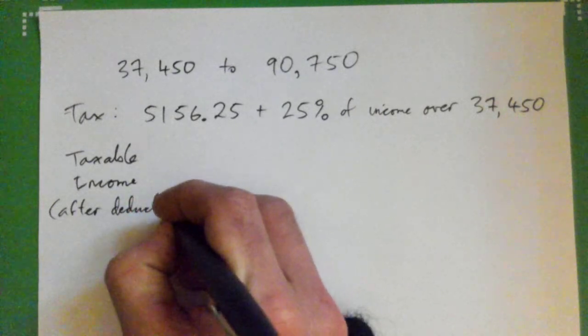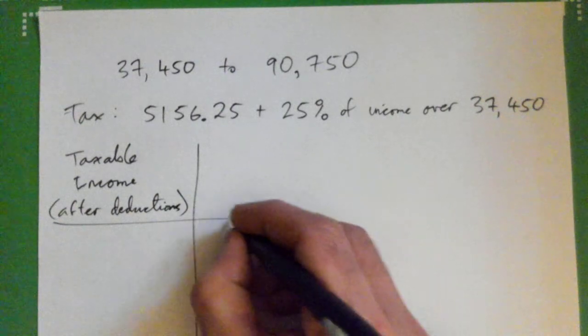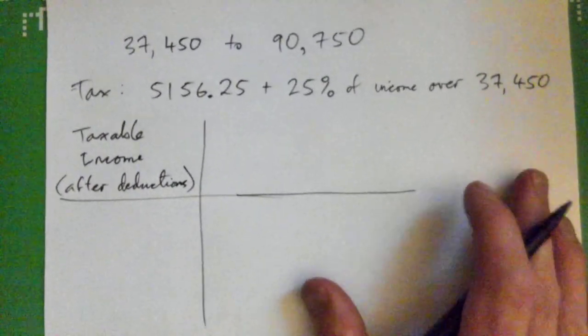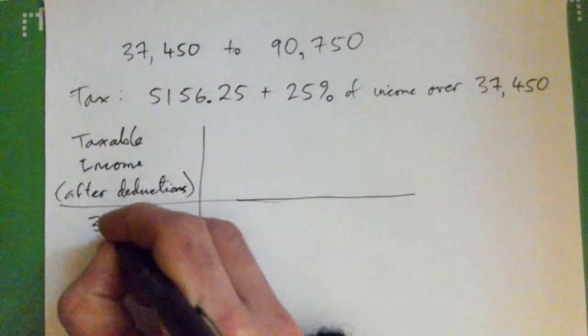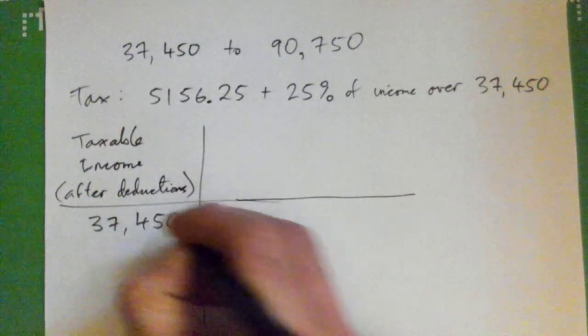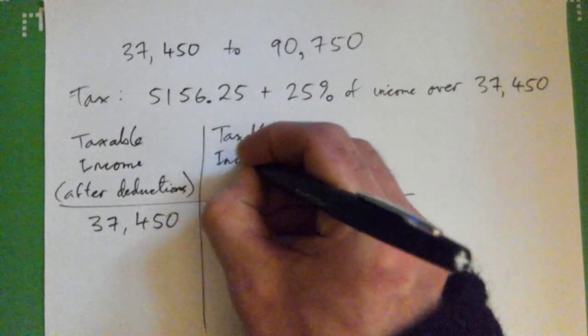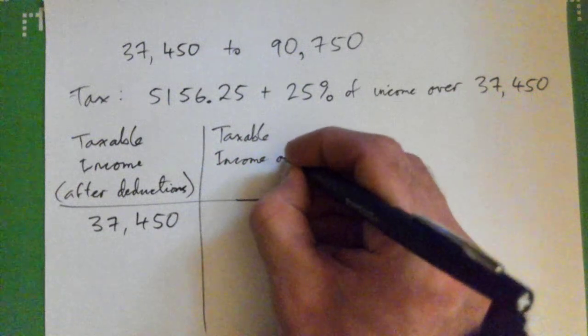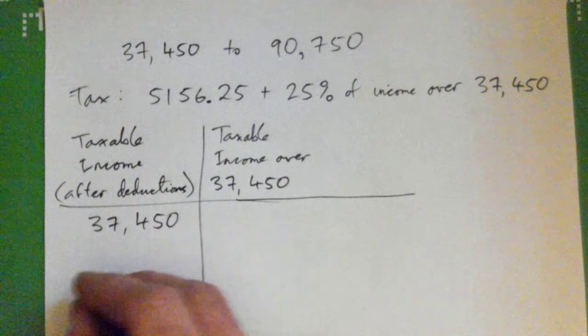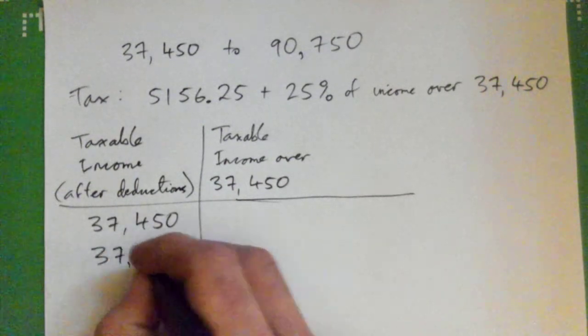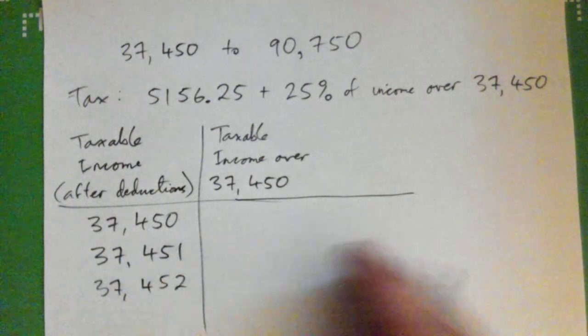So after deductions, if your taxable income is exactly $37,450, then we have taxable income over $37,450. So $37,451, $37,452, and so on.